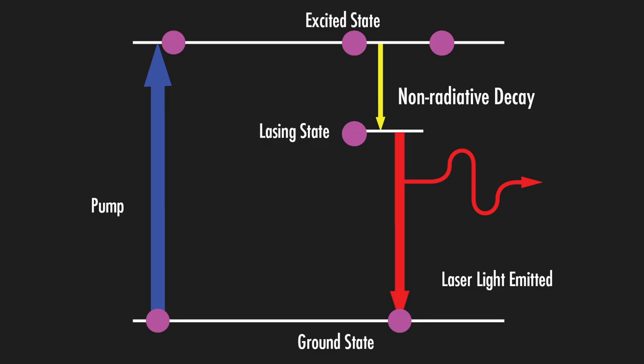For a laser to function efficiently, the number of particles in the excited states needs to exceed the number of electrons in the ground state, called population inversion. This is normally not allowed by the rules of quantum physics.